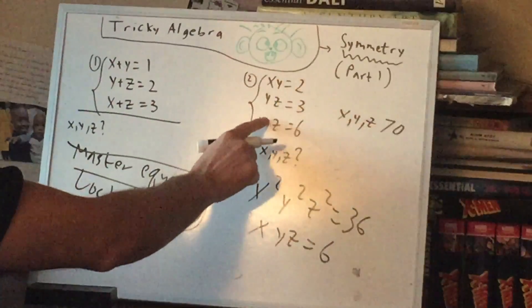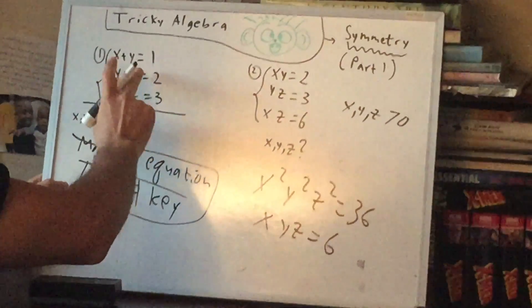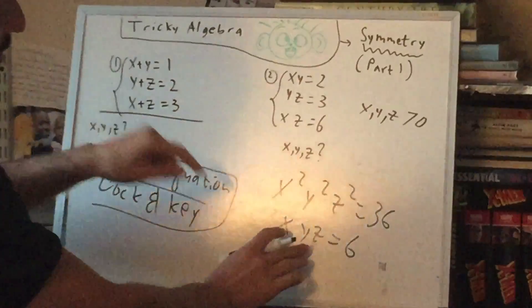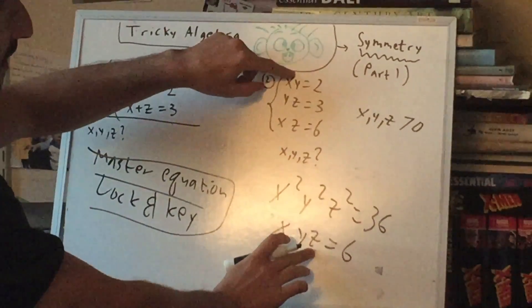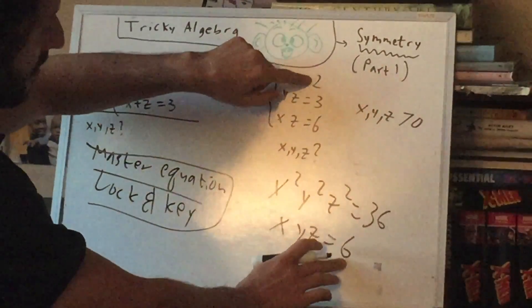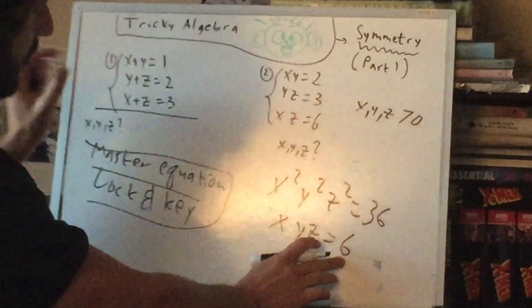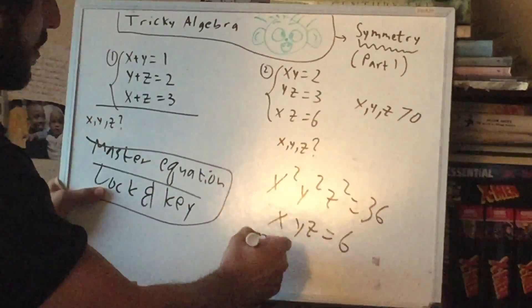except now we're not subtracting like we did in this one, but we're going to divide. So, x, y, z divided by, let's say, x and y, and out pops the z. That's why I'm calling it a lock and key. And z is going to be 3. So by combining these, we get z is 3.